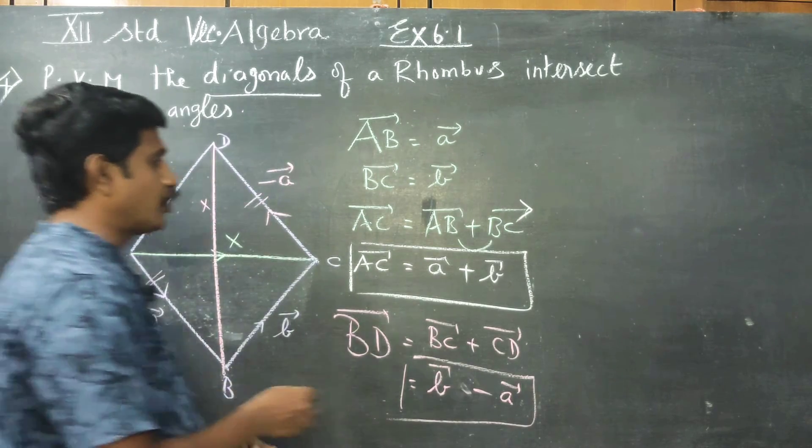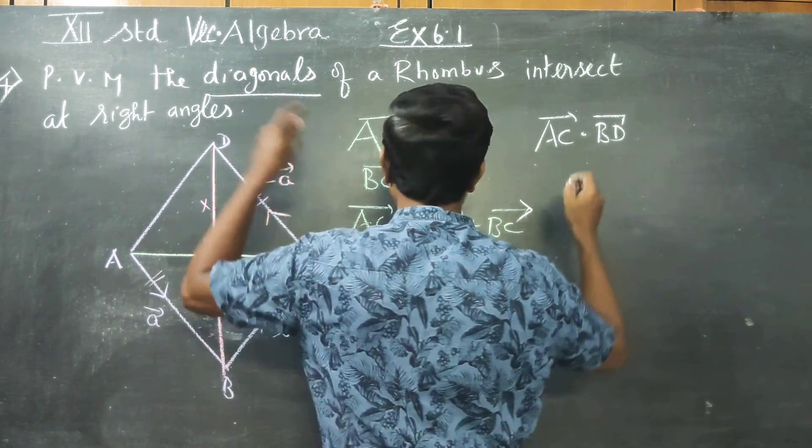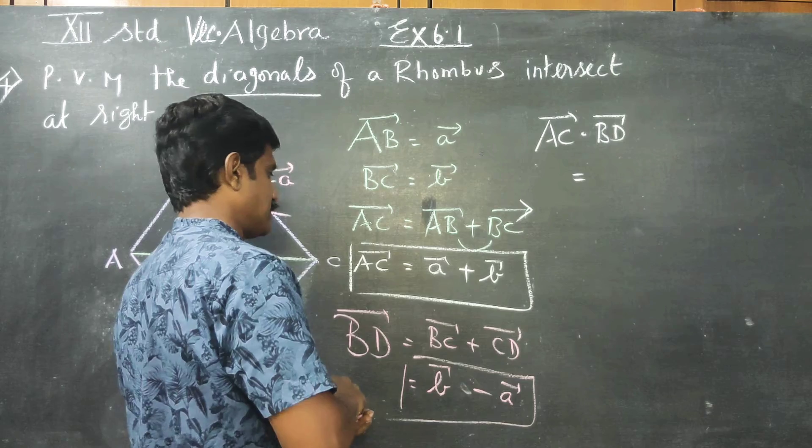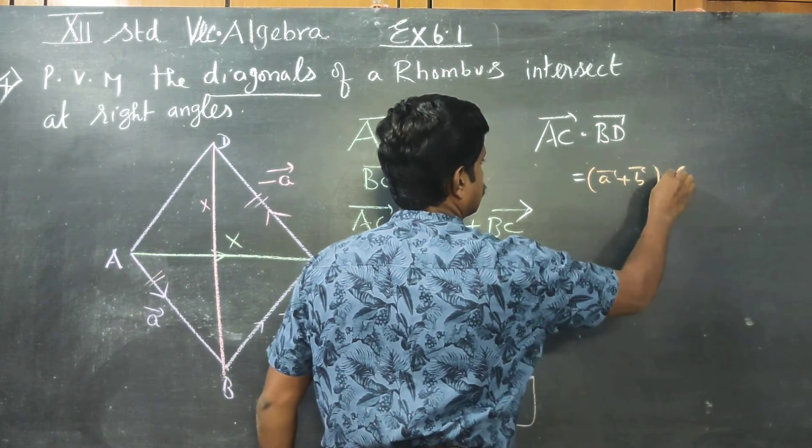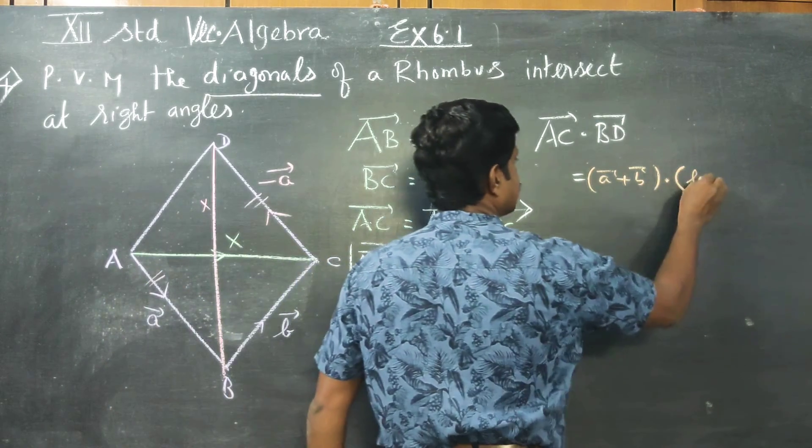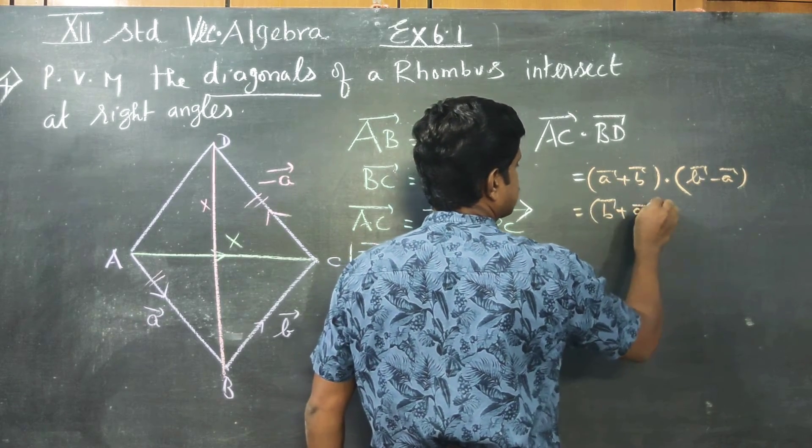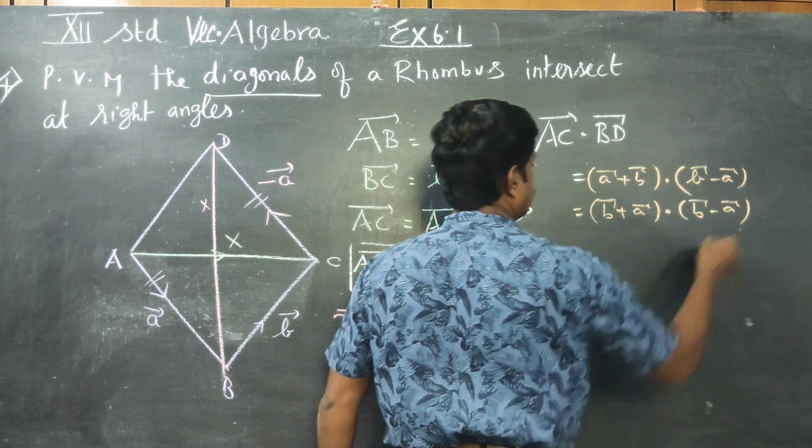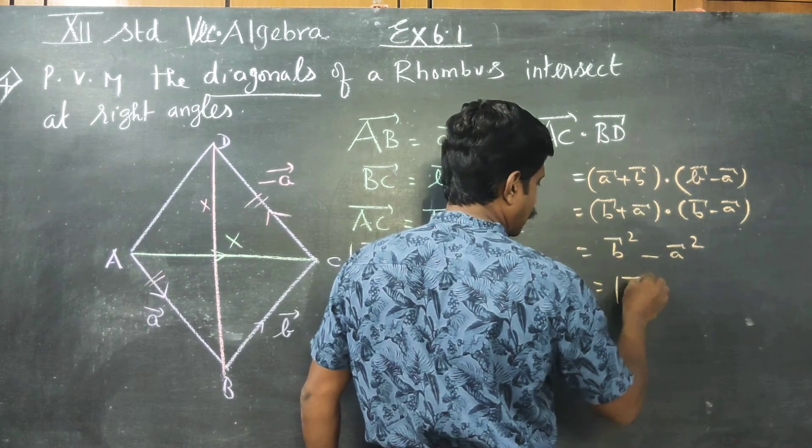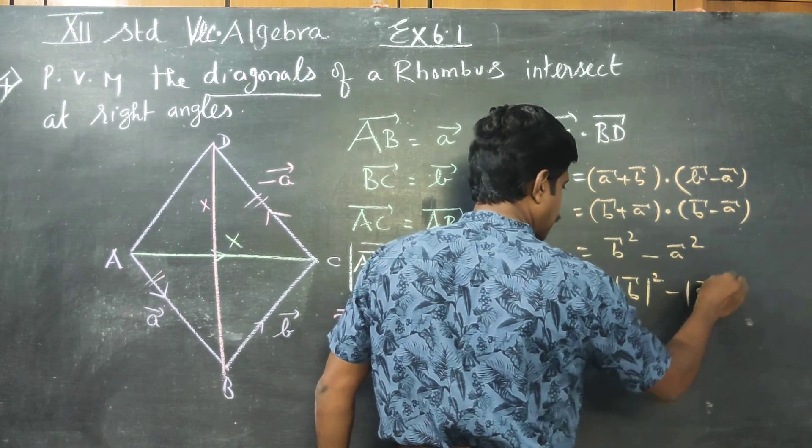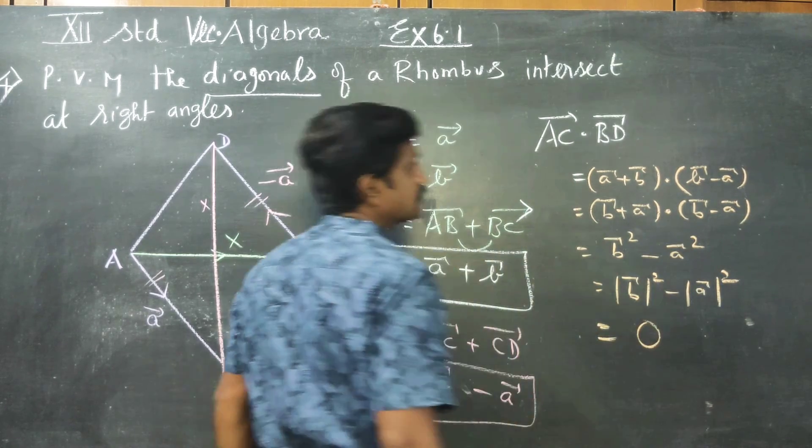AC vector dot BD vector. AC vector dot BD vector is equal to (a plus b) dot (b minus a). A plus b into a minus b can be written as b square minus a square. Use magnitude. Rhombus all sides measurements are equal, therefore answer is 0.